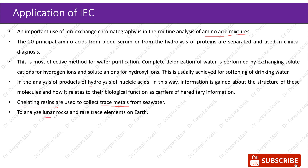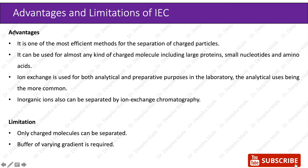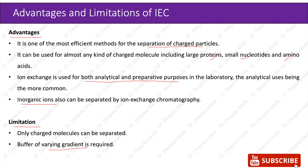Ion exchange chromatography is also used to analyze lunar rocks and rare trace elements on earth. Advantages include that it is one of the most efficient methods for separation of charged particles. It can be used for almost any kind of charged molecules including large proteins, small nucleotides, and amino acids. Ion exchange is used for both analytical and preparative purposes in the laboratory, with analytical uses being the more common. Inorganic ions can also be separated by ion exchange chromatography. Limitations include that only charged molecules can be separated — the sample you are applying should have charged molecules. Also, a buffer of varying gradient is required, where the elution is gradient elution with buffer of increasing strength used step by step.